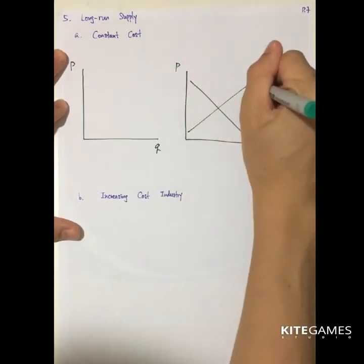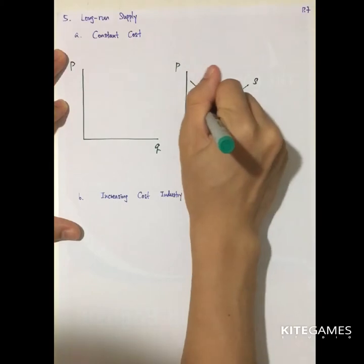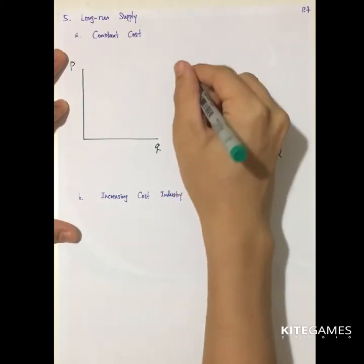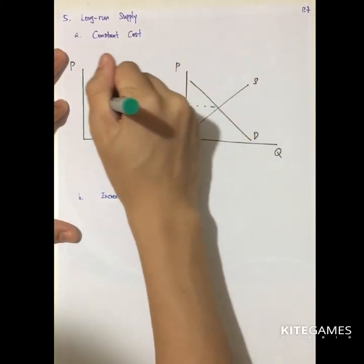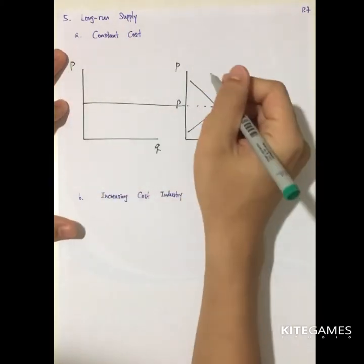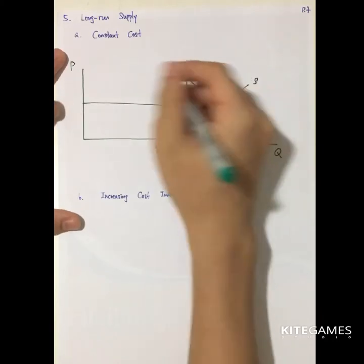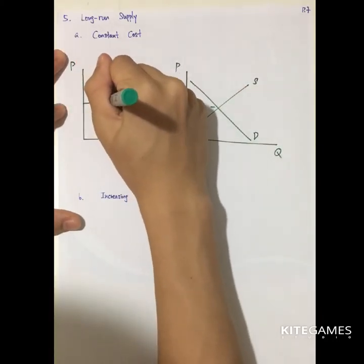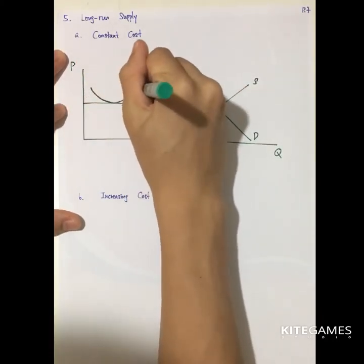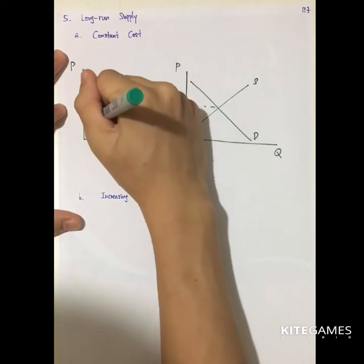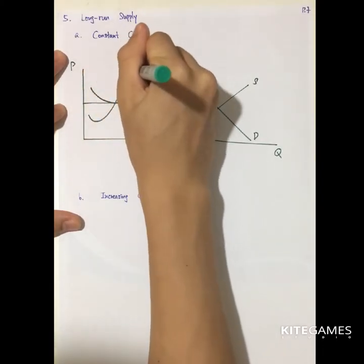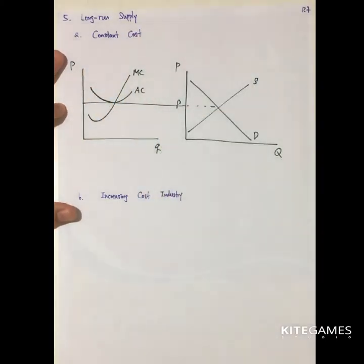Say you have a price level. At the long run, the firm will produce at the minimum average cost, because at the long run there are no profits.